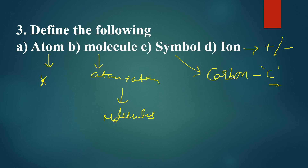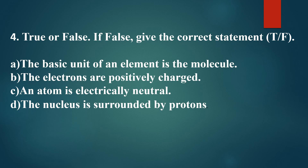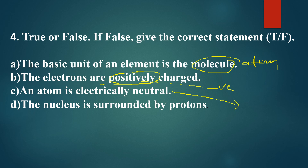Next: true or false — if false, give the correct statement. First: the basic unit of an element is a molecule. This is false — the basic unit of an element is an atom, not a molecule. Second: electrons are positively charged. This is false — electrons are negatively charged. Third: atom is electrically neutral. This is true, because it contains equal numbers of protons and electrons.